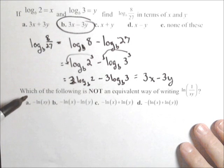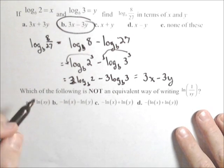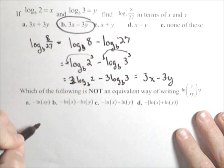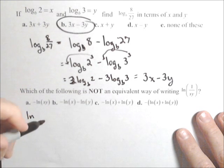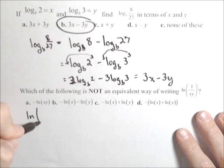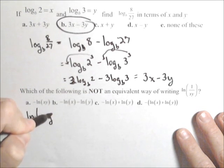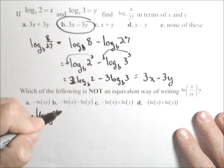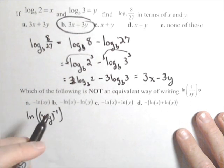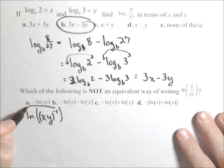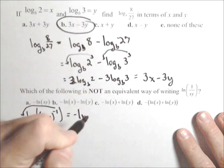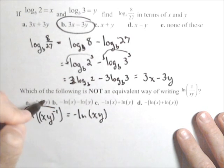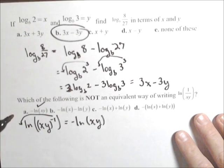The next one, which one of the following is not an equivalent way of writing ln of one over x y, ln of one divided by x y. Well, let's see. So first off, I can rewrite this as ln, I can write it as x y to the negative one because that's the same thing as one over x y. And I can pull the negative one out front. So that's negative ln of x y. So a is okay.